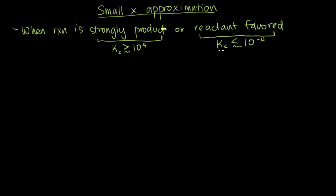These are the situations where the small x approximation works really well. Anywhere in between where kc is between 10 to the minus four and 10 to the four, it doesn't work as well and you'll want to use a different method. You'll usually want to use the quadratic equation or successive approximation.